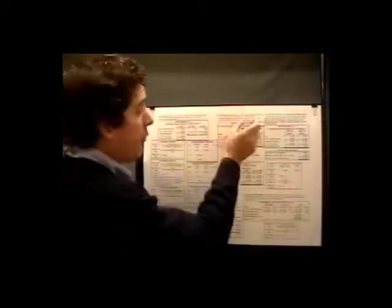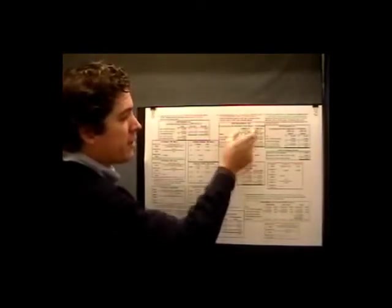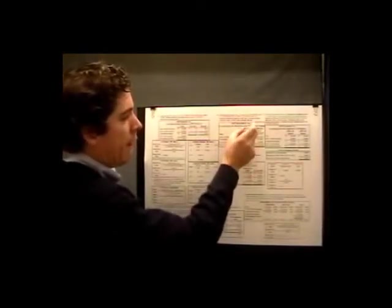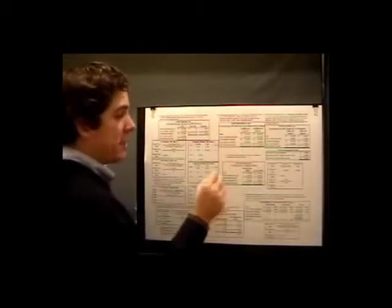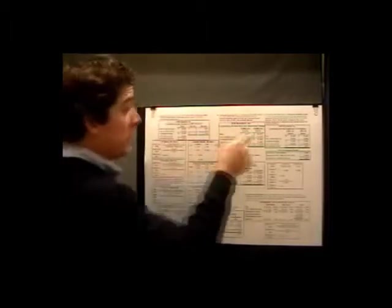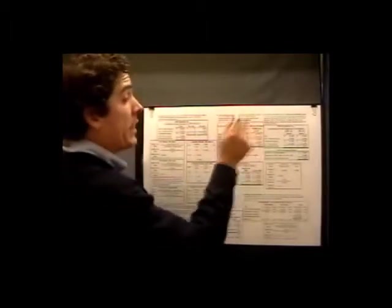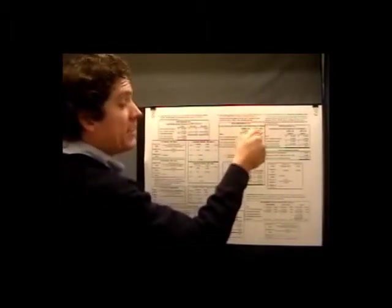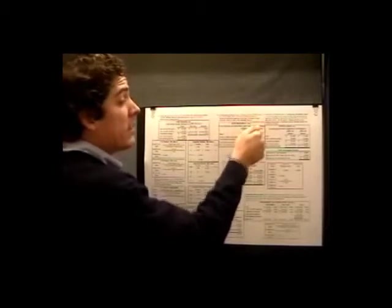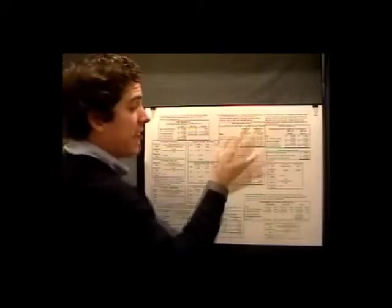We've got the given information from problem one, which is our sales at 5,000 lifesavers — sales, variable expenses, contribution margin, fixed expenses, and net operating income. Now at 10,000 units, we're increasing sales but reducing our sales price to $8. So $8 times 10,000 equals $80,000 in sales.